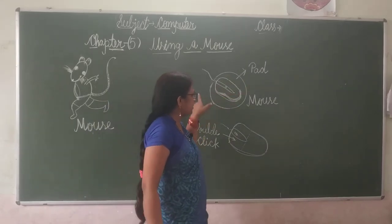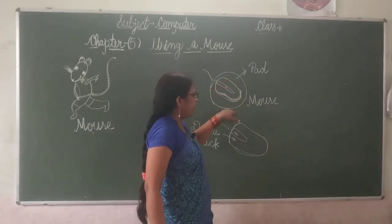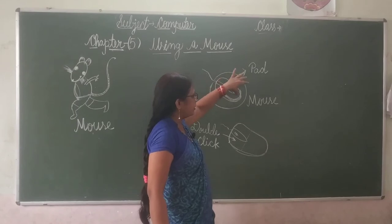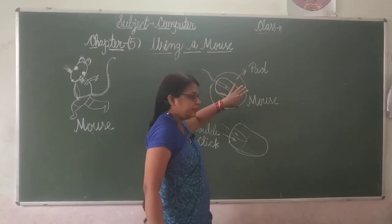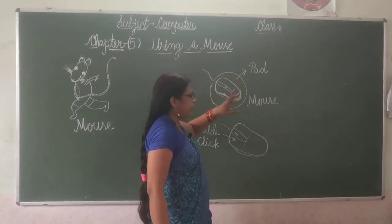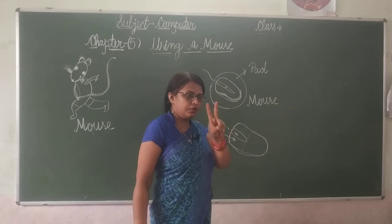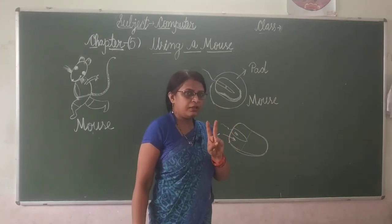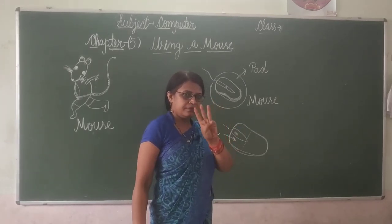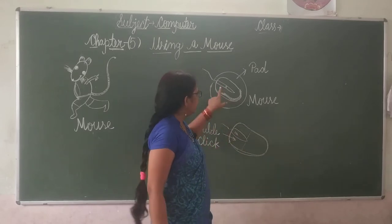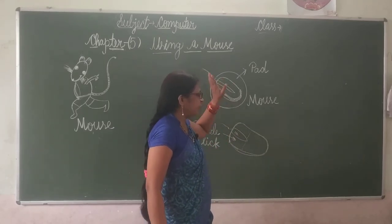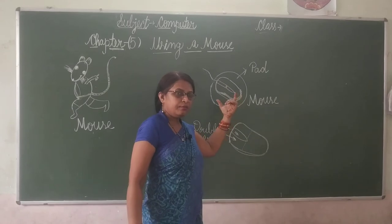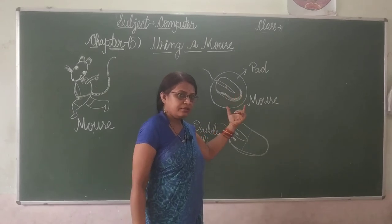And this is a pad. The mouse sits upon the pad. It has two or three buttons. Some mouse have two buttons and some mouse have three buttons — one, two, three. Okay, this is called mouse.